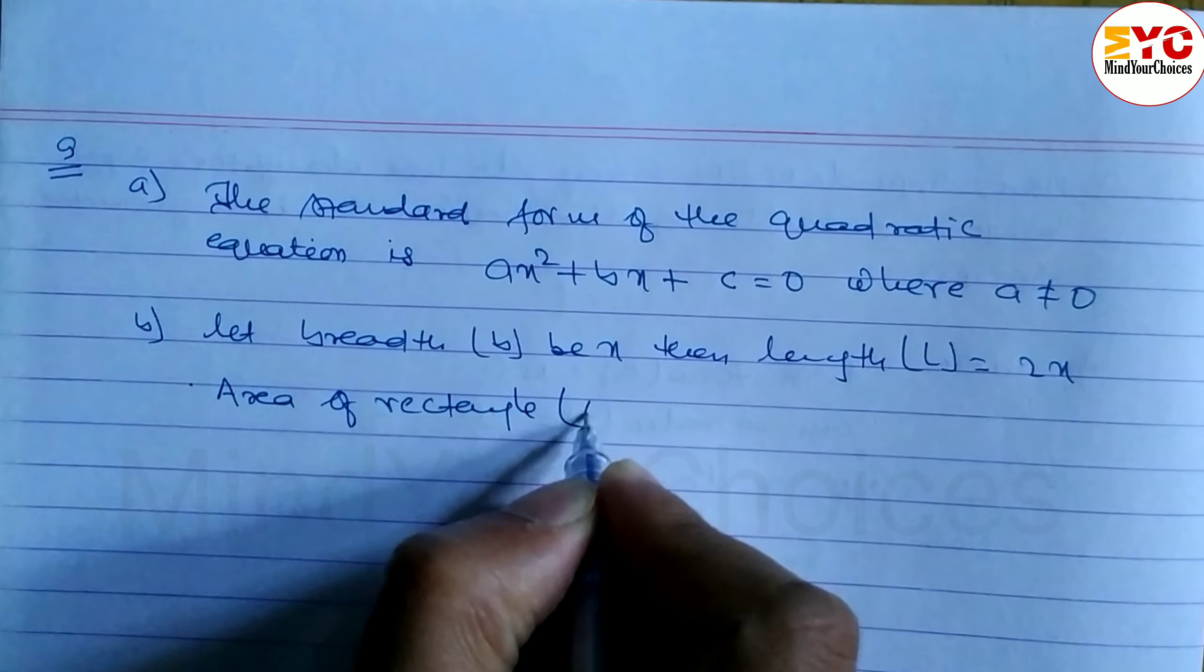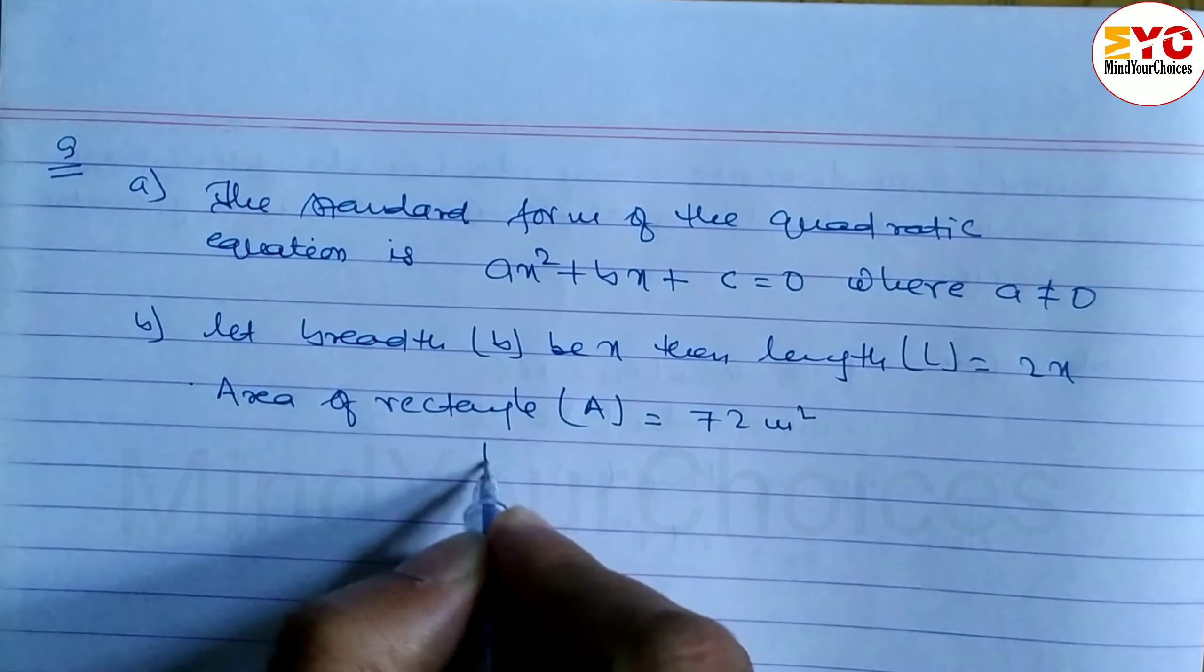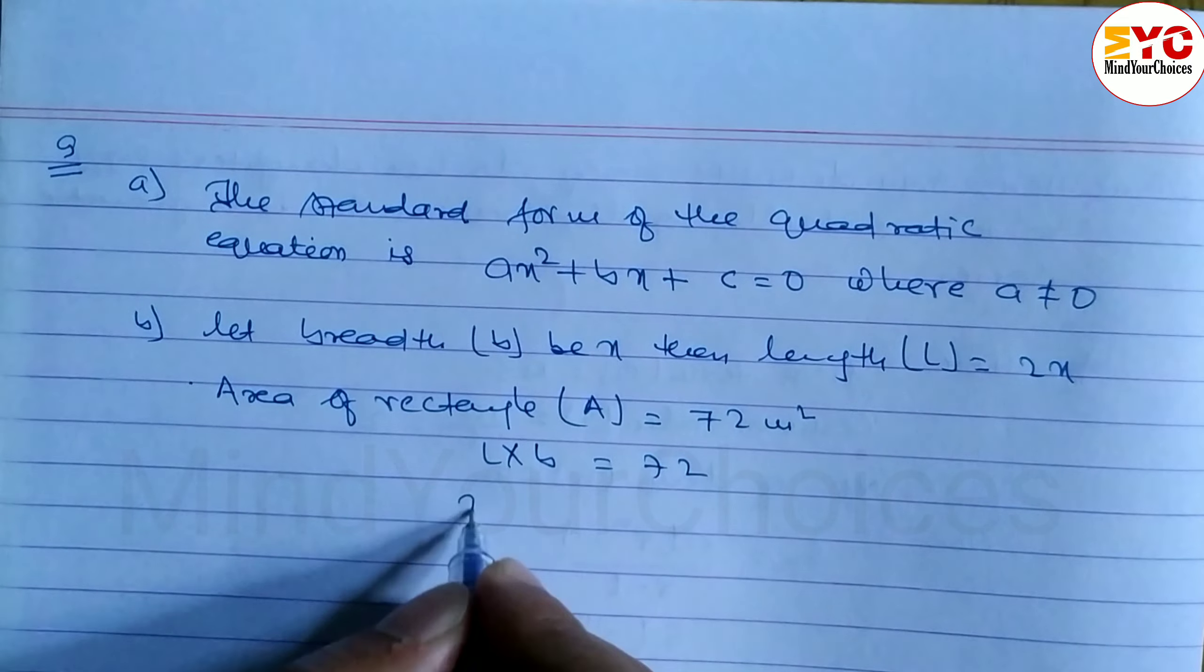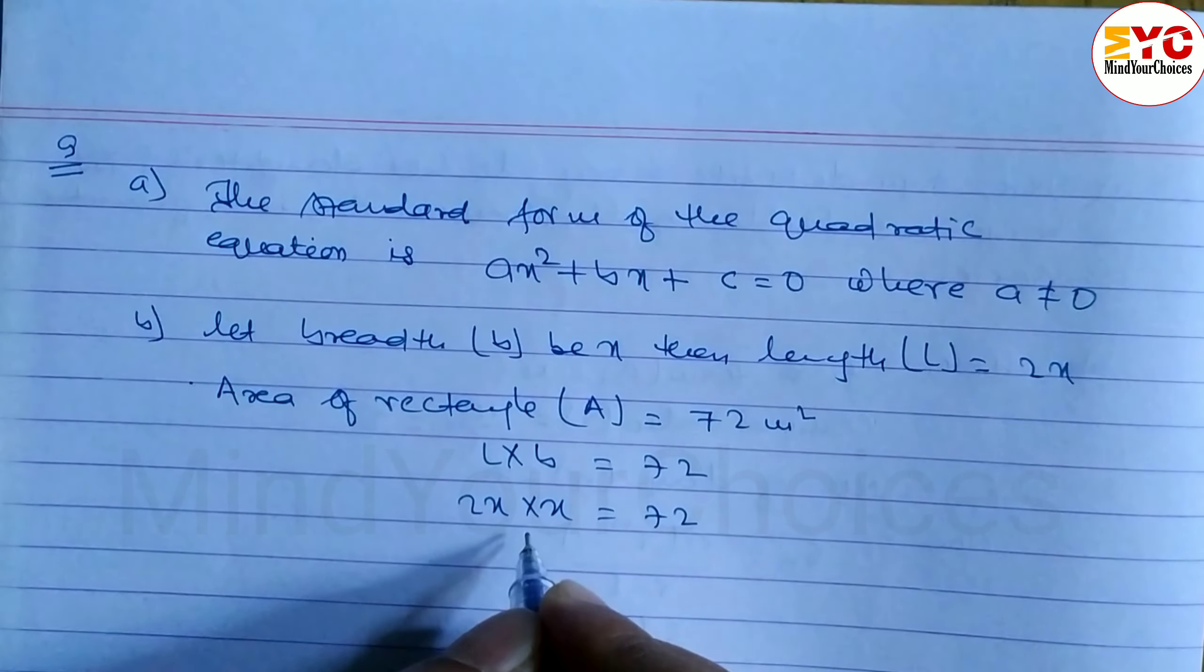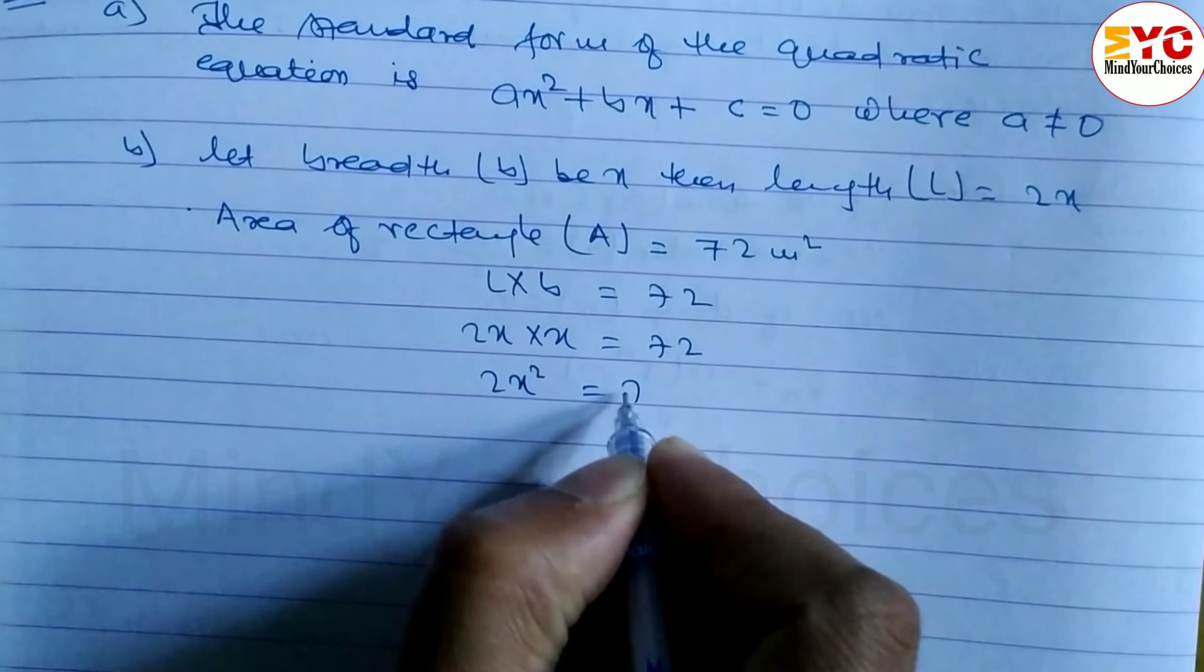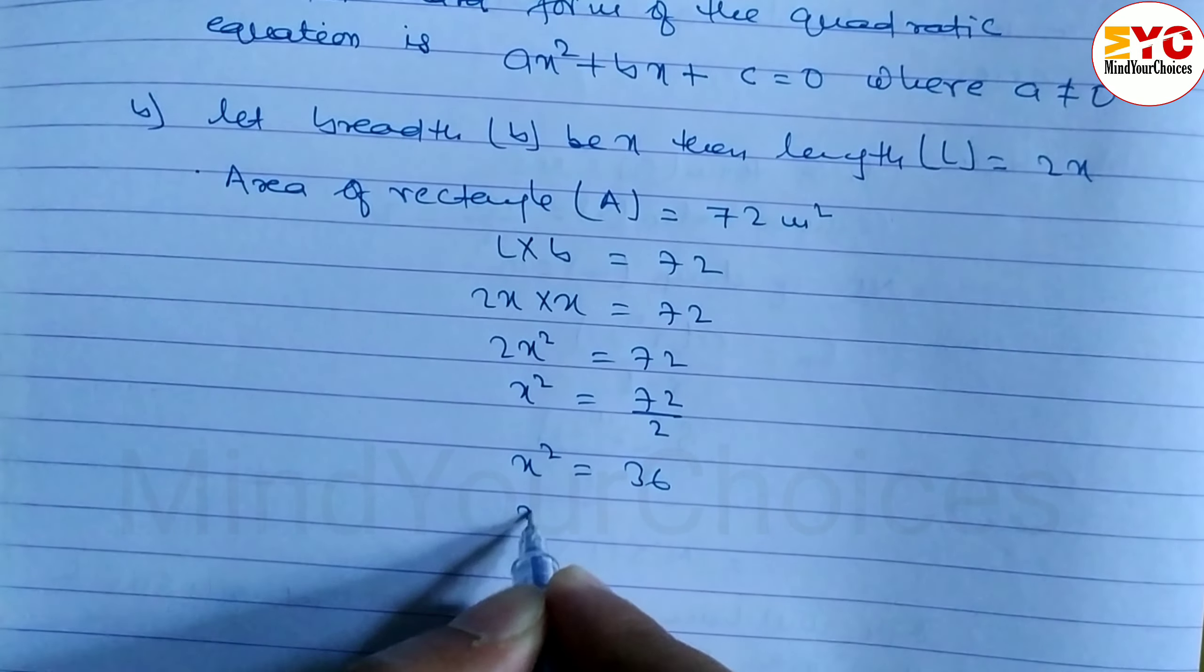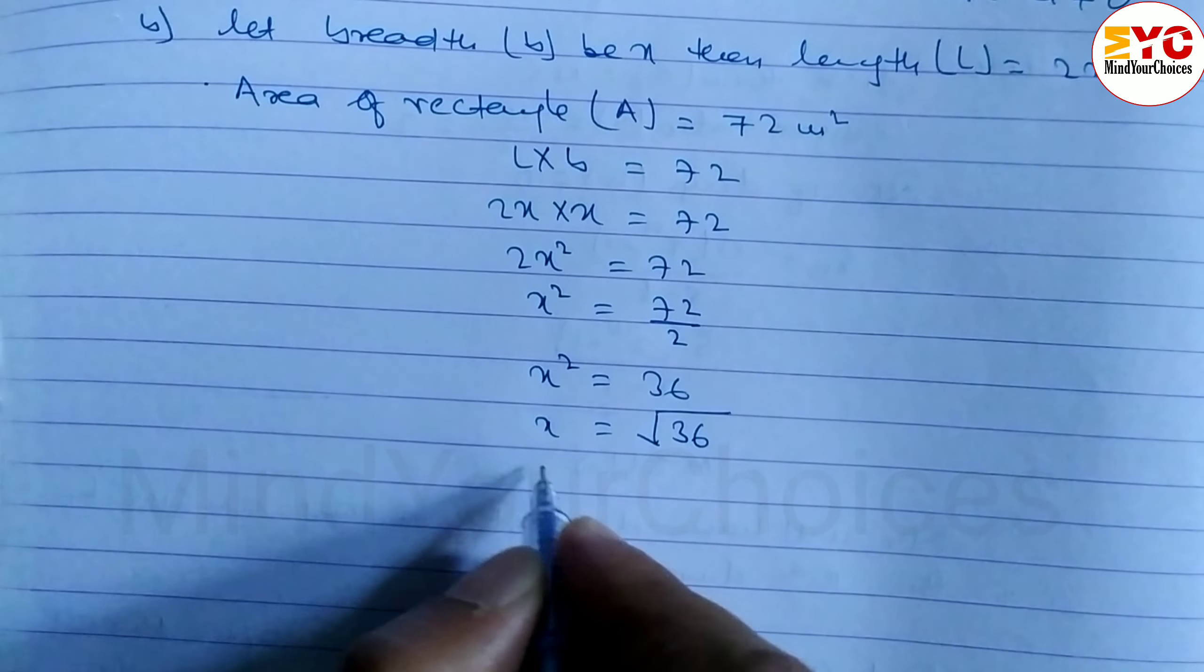Area is equal to 72 square meters. Length into breadth is equal to 72. Length is 2x, so 2x into breadth x is equal to 72. Multiply these two: 2x square is equal to 72. x square is equal to 72 divided by 2, so x square is equal to 36. Since length is positive, x is equal to root 36, so x is equal to 6.